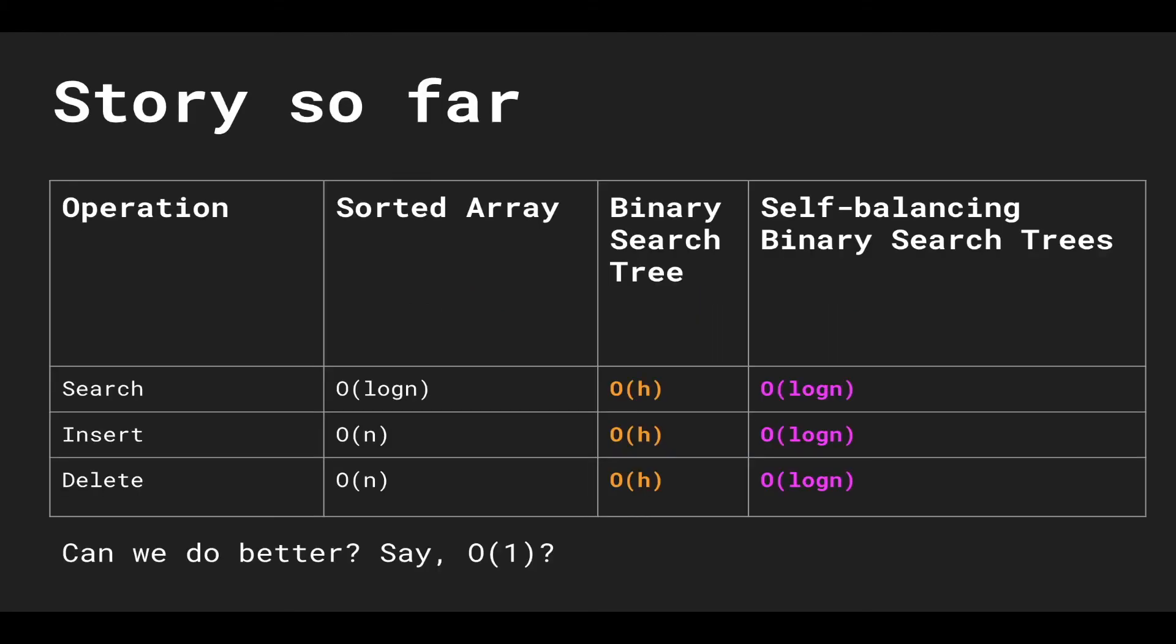This is the story so far. We saw that the last data structure that we covered was self-balancing binary search trees and we had logarithmic searching, insertion and deletion. The next question is can we do better? Say constant time.